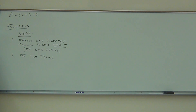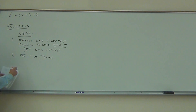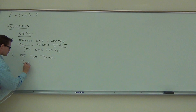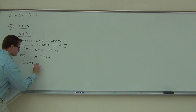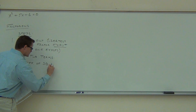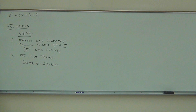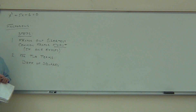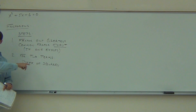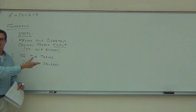If you have two terms, it has to fall in one of three categories in order to factor it. The first thing you're going to check for — I hope this sounds familiar — is if it is a difference of squares. A difference of squares means you have one number squared, another number squared, and a minus between them. 'Difference' in mathematics means minus, subtraction.